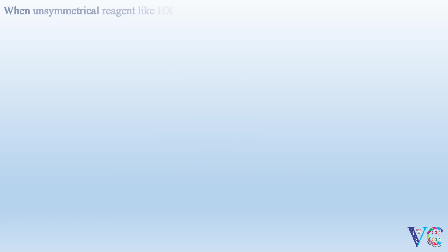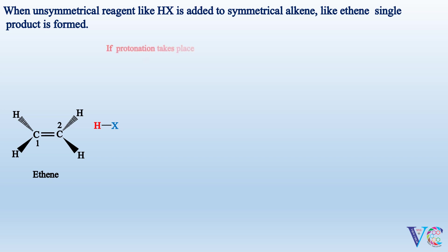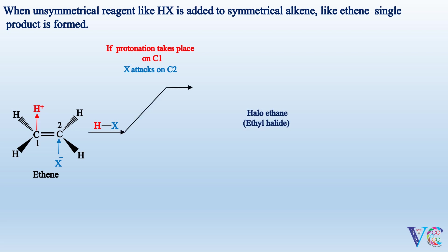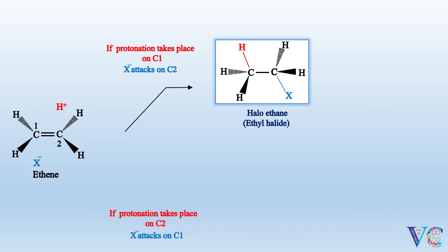When an unsymmetrical reagent like H-X is added to a symmetrical alkene like ethene, a single product is formed. Whether protonation takes place on C1 and X attacks C2, or protonation takes place on C2 and X attacks C1, the same haloethane is formed in both cases.